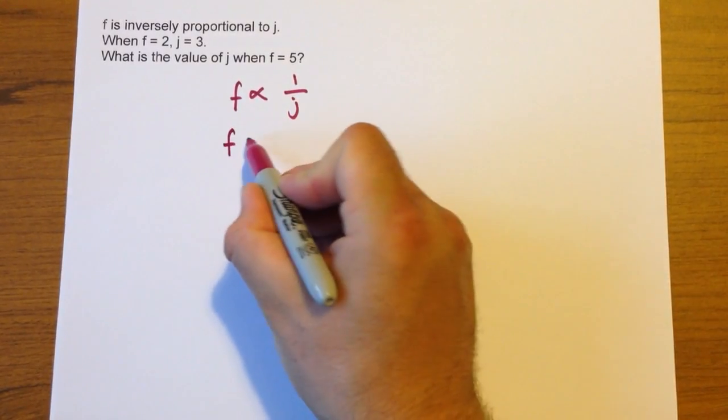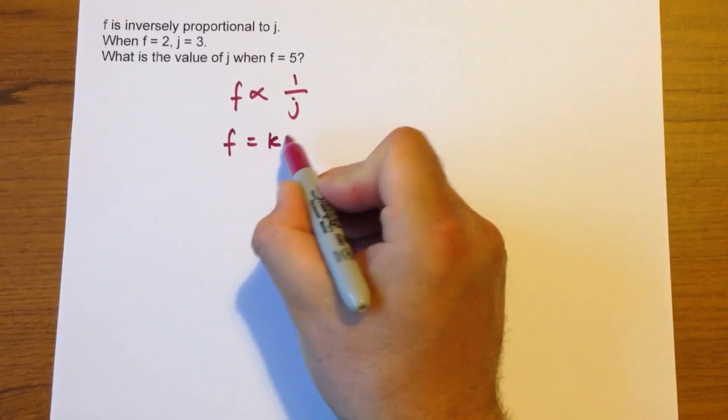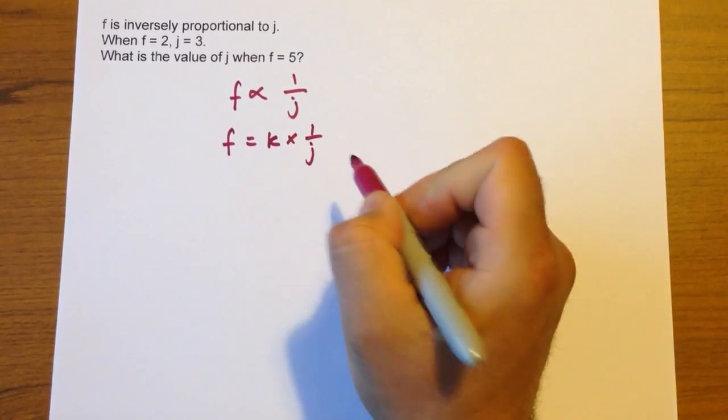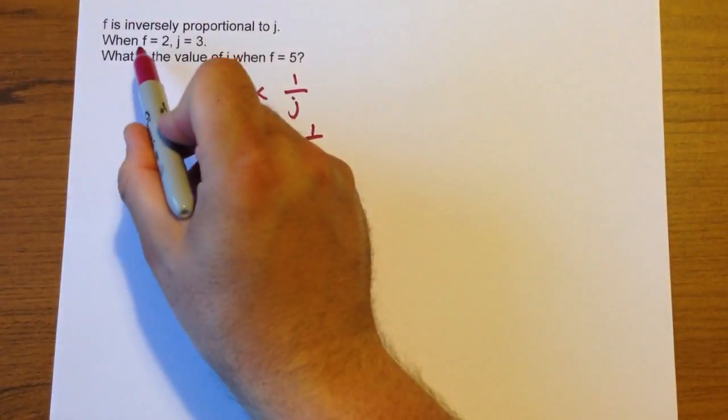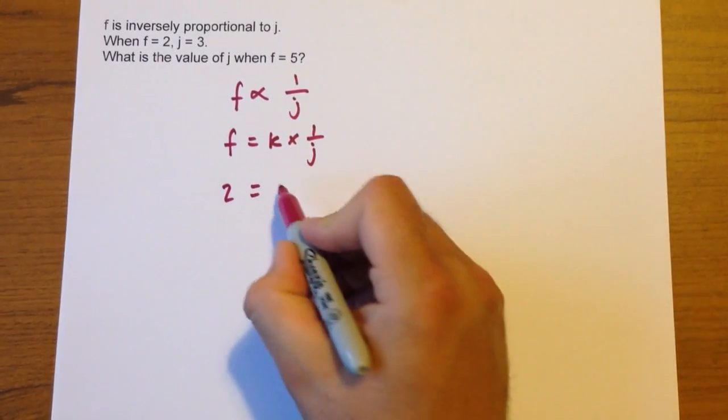Now we'll get rid of the proportional sign and it means k multiplied by 1 over j. Substitute in what you know, when f is 2, j is 3.